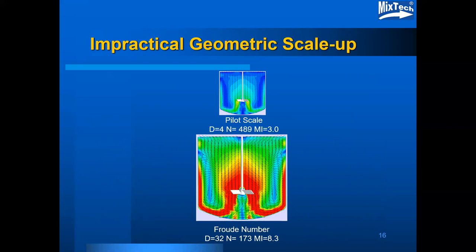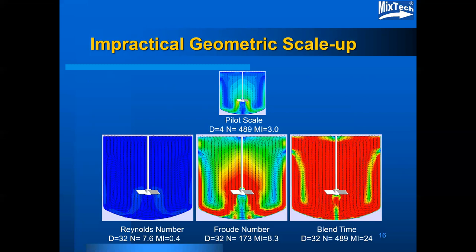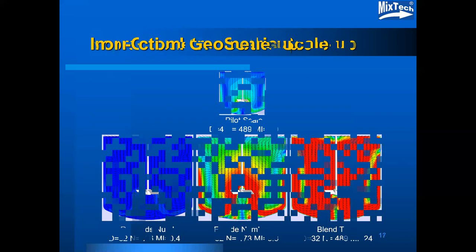Looking at some of the less practical scale-up criteria: using an equal Froude number, which usually gives a very aggressive scale-up, corresponds to a rotational speed in excess of power per volume and a mixing index of 8.3 for the large scale. On the other end of the scale, an equal Reynolds number gives a ridiculously low rotational speed and a mixing index of 0.4, representing an ineffective process as also shown by the CFD model. The equal blend time scale-up requires the large scale speed to be the same as the small scale speed, and the very high velocities represented in the CFD model correspond to a mixing index of 24 — larger than anything likely to be practical for an industrial application.